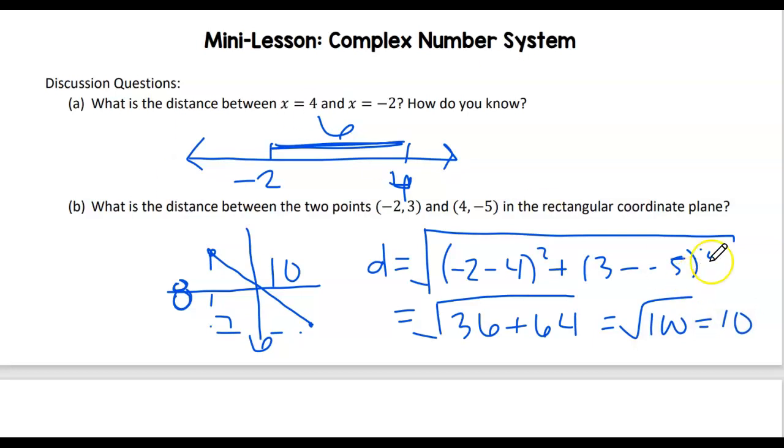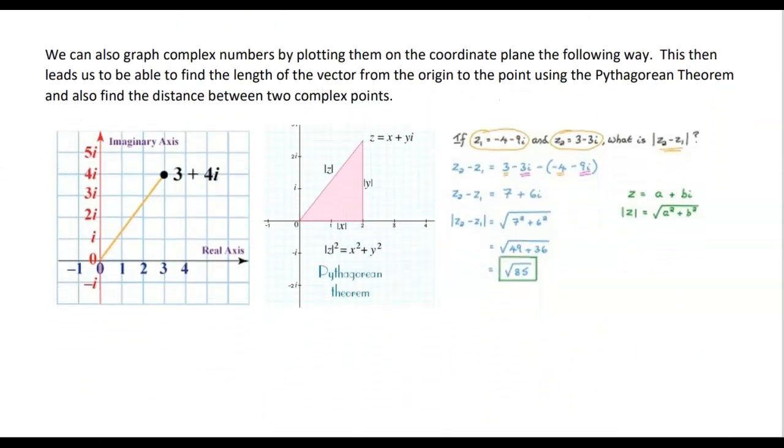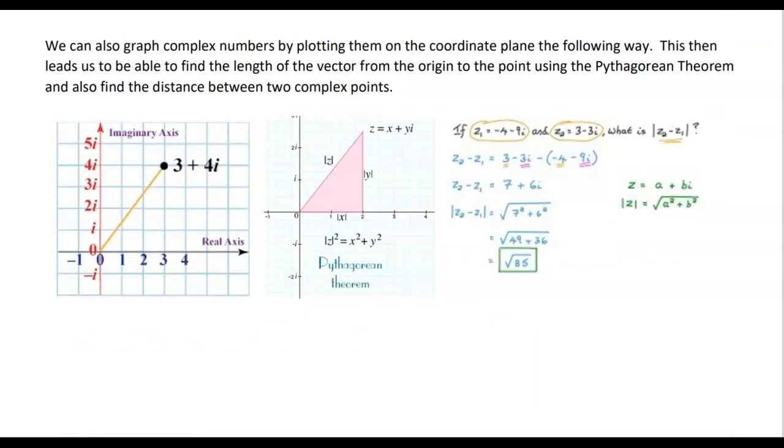We now need to talk about how complex numbers work. Complex numbers are of the form a plus bi. And how we are going to end up graphing this is your a goes on your real axis or your x axis, and your imaginary numbers go on your y axis. And then we can find this length using the distance formula or the Pythagorean theorem for any imaginary number in the coordinate planes. You can figure out the vector distance, or the distance between that number and the origin.